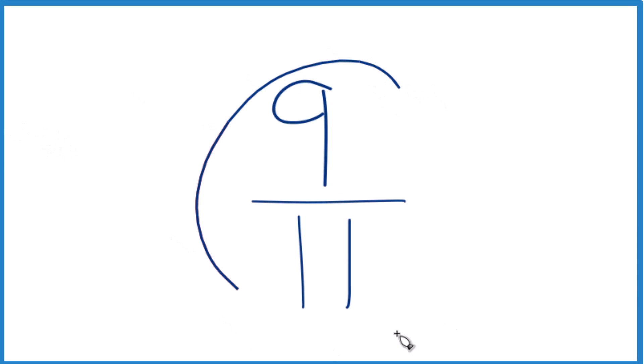So let's write the fraction 9 elevenths as a decimal. Here's how we do it. You could take your calculator and divide 9 by 11 and that would give you the decimal.